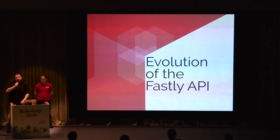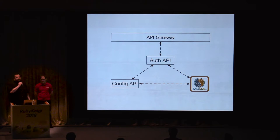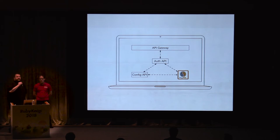We'd like to discuss a problem that we believe impacts organizations of all sizes. To help us illustrate this problem, I'd like to tell you a story about the evolution of Fastly's API. This is a rough approximation of the service architecture that backed the Fastly API circa 2012.